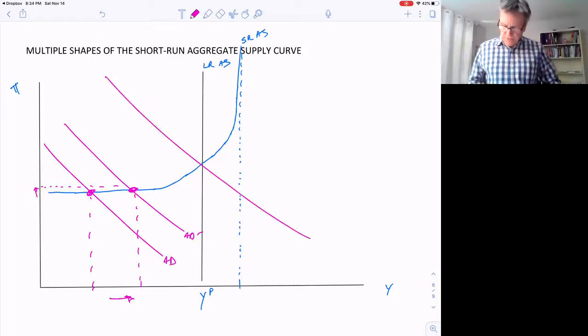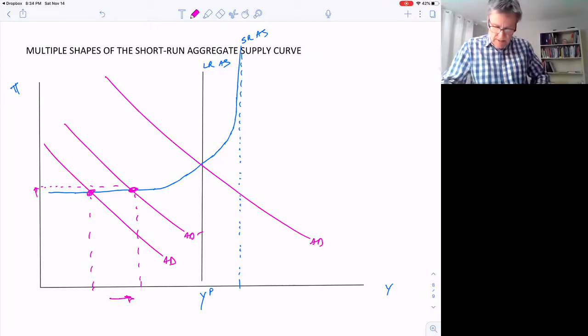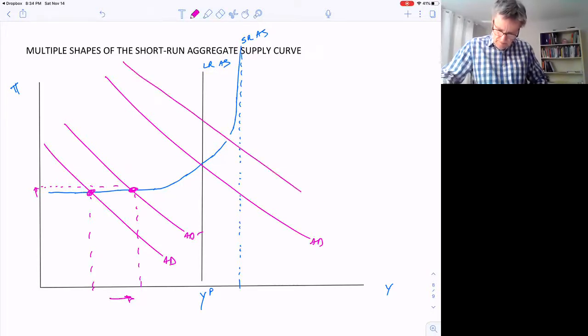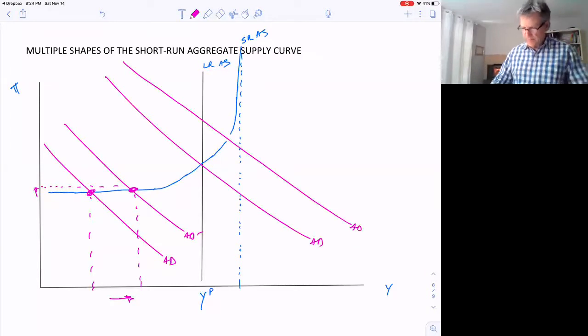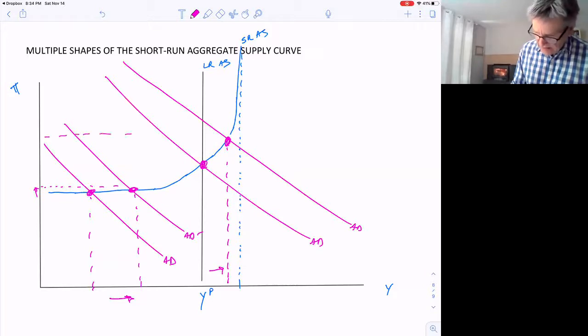But if we're at full employment, if aggregate demand is right here, the intersection's at full employment, and we have some sort of fiscal policy, some tax cut or increase in GDP by the same amount, I'll try to draw it by the same amount here. Increase in aggregate demand. You can see that the increase in output isn't going to be as much. So there'll only be this much of an increase in output. But the effect on prices or inflation would be a whole lot more.